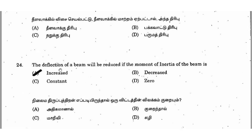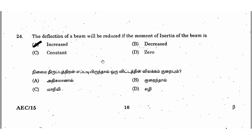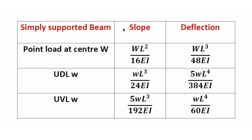Next: the deflection of a beam will be reduced if the moment of inertia of the beam is increased or decreased or constant? The right answer is increased. For a simply supported beam with a central point load, the deflection formula is WL³ divided by 48EI. The moment of inertia I is in the denominator, so it is inversely proportional to deflection.